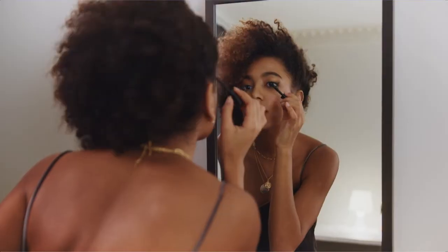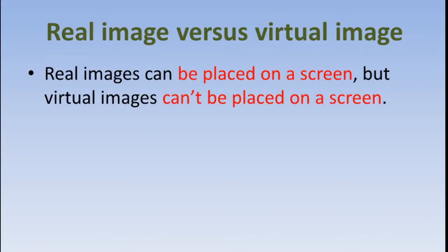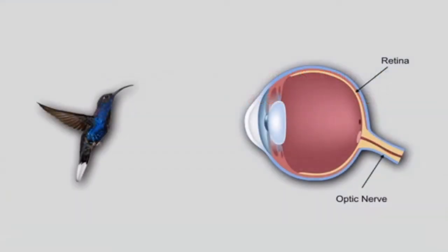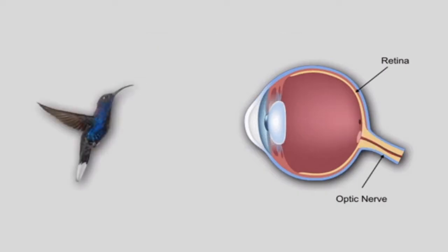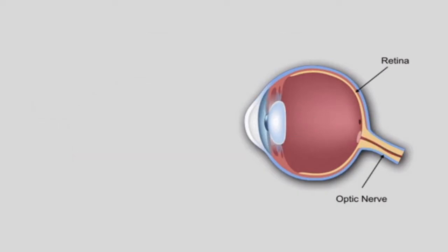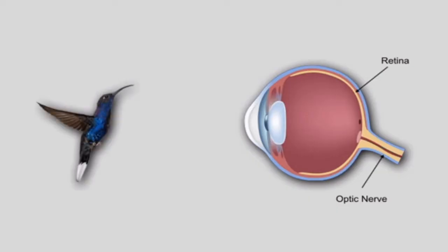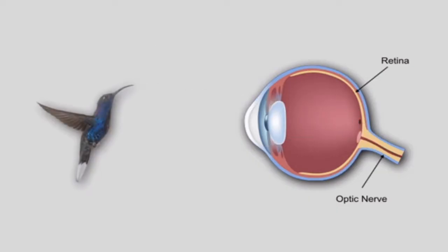Real image versus virtual image: real images can be placed on a screen, but virtual images cannot be placed on a screen. Real images are always inverted, but virtual images are erect.